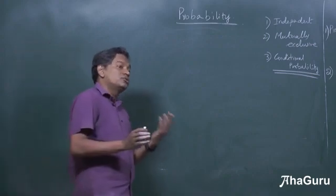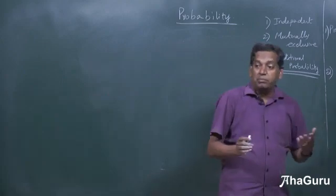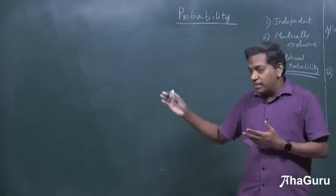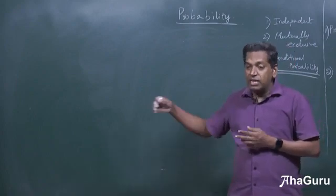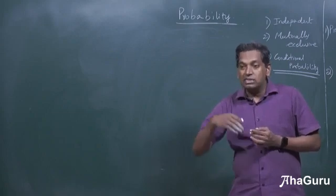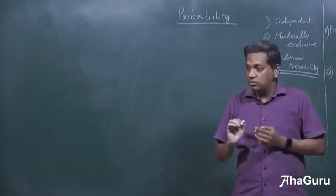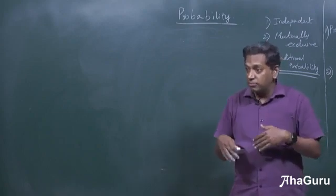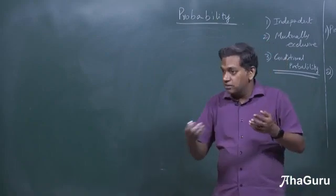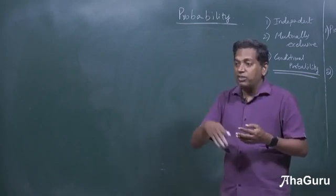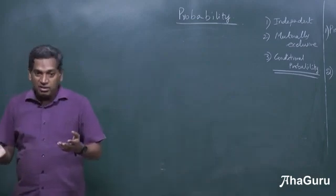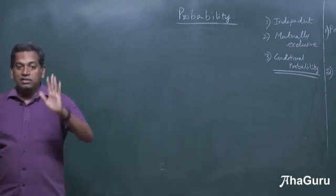But it could also be that A and B are dependent in other ways. For example, in that same dice and sum and product, if I had said sum is 5 and product is even, they are clearly dependent. The probability will be very high for the intersection. Because whenever sum is 5, the product is actually even. They are so dependent. If sum is 5, I can say product is even with certainty.